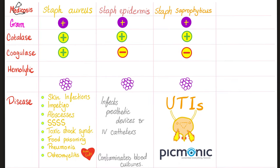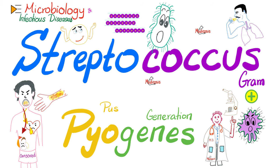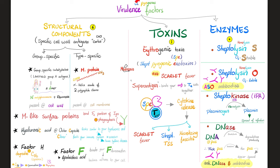Pause and review. Next, let's leave the Staphs and talk about Streptococci, starting with Streptococcus pyogenes. Virulence factors of Streptococcus pyogenes: we have six structural components, the most important of which is the M protein. For taxonomy and classification, we use carbohydrates that are specific to the group — such as group A, group B, group D streptococci, etc.